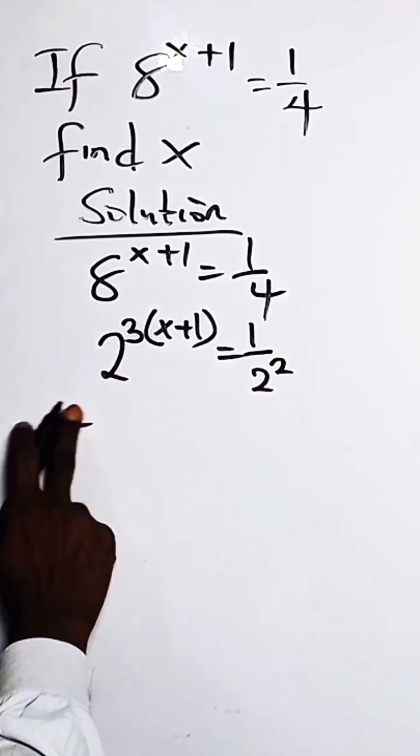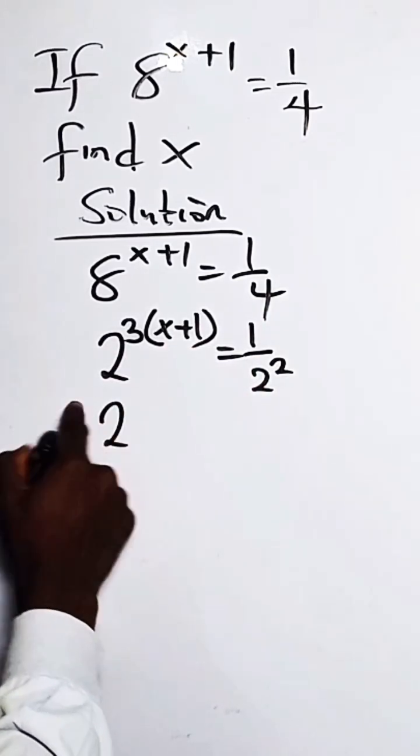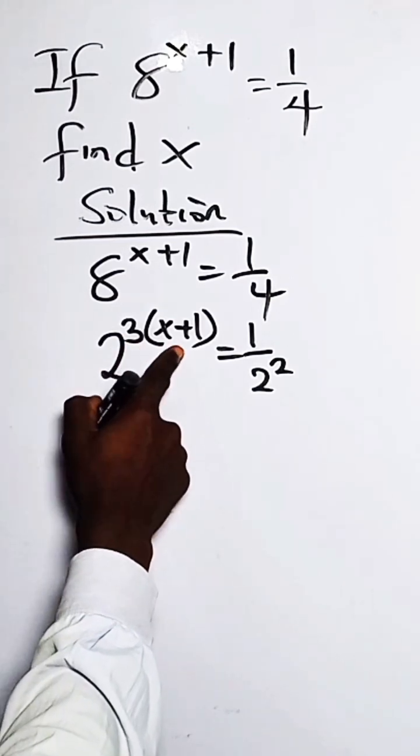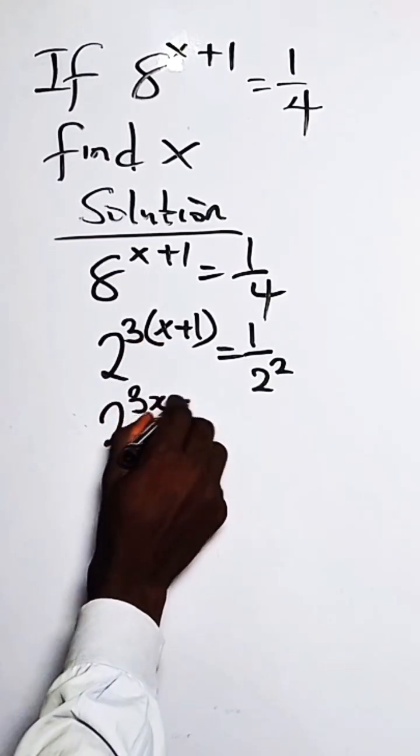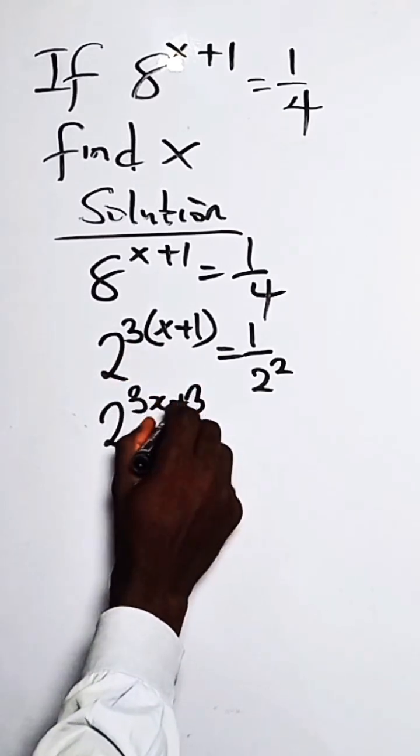So we can write this as 2. When you apply the exponent rules, we have 3 times x is 3x plus 3 times 1 is 3, equals...